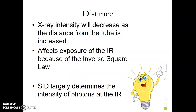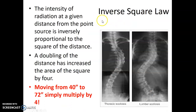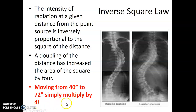Distance. X-ray intensity will decrease as the distance from the tube is increased. The farther away you are, the less penetrating it will be — the intensity is spread out. The intensity of radiation at a given distance from the point source is inversely proportional to the square of the distance. That's the inverse square law. In the clinical world, I don't get out my calculator. We do scoliosis x-rays at 72 inches; normally I do spine work at 40 inches. I take whatever technique I'd use at 40 inches and simply multiply by 4 if I'm moving my SID to 72.